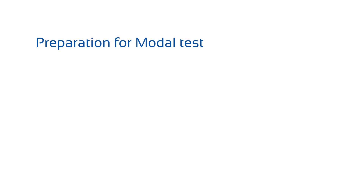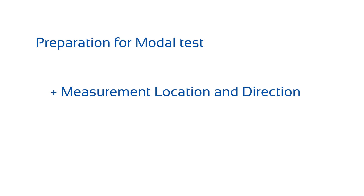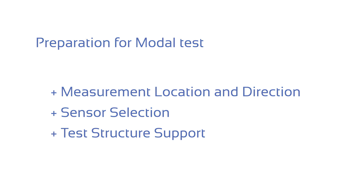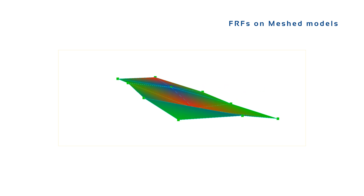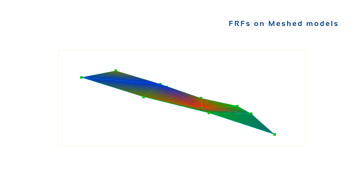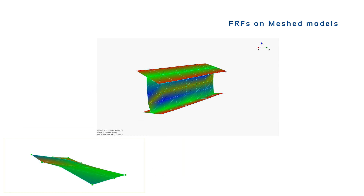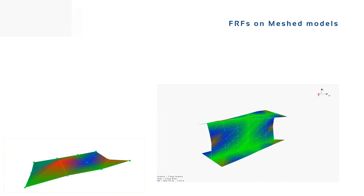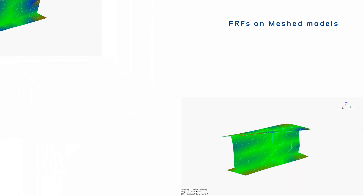This discussion will include the following aspects: measurement location and direction, sensor selection, and support of the test structure. The purpose of modal testing is to acquire the FRFs based on the mesh model of the structure under test. This step is crucial because the success of modal analysis relies heavily on the quality of measured FRF signals.